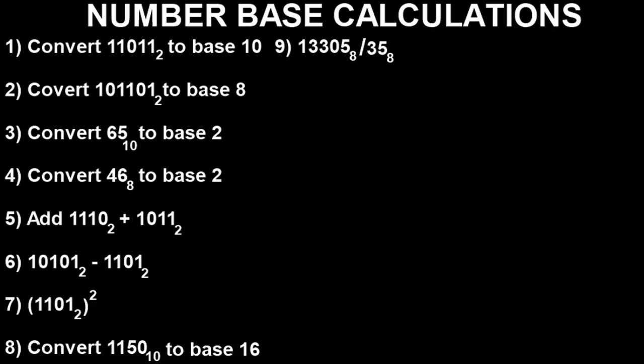I'm going to explain a lot here, so ensure you stick with me to the very end of this video. Before we get to the Casio calculator, let's quickly look at the problems we'll be solving together. Question one asks us to convert a value in base two to base ten. We'll do it together with the calculator. This one converts a number to base eight.